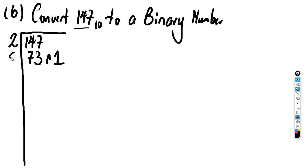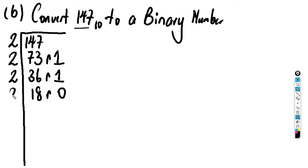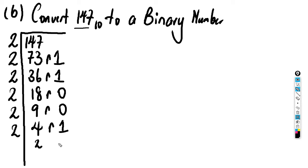Now two can go into 36 without leaving a remainder — you get 18 remainder zero. Then two can go into 18 without leaving a remainder as well — you get nine remainder zero. Then two into nine gives us four; four times two gives you eight with a remainder of one. Two can go into four giving you two with a remainder of zero. Two into two gives you one with a remainder of zero. Then two into one gives you zero with a remainder of one.